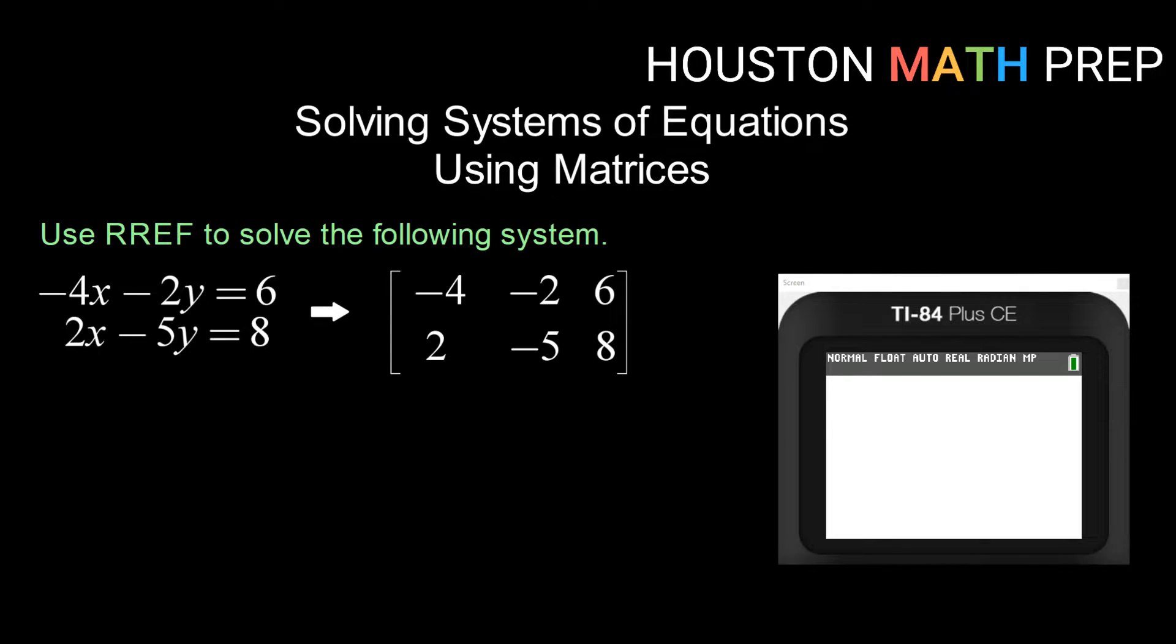Alright, so the first thing we need to do is put our matrix into the calculator. We're going to do that by going into our matrix menu and going over to edit. Click on whichever matrix you want to put it in. We'll start with A. And you need to first enter the dimensions. So this matrix has two rows, so it is a two by, and then I've got three columns, so this is a two by three. Then we just go ahead and enter our values. So negative four, negative two, six, and two, negative five, eight.